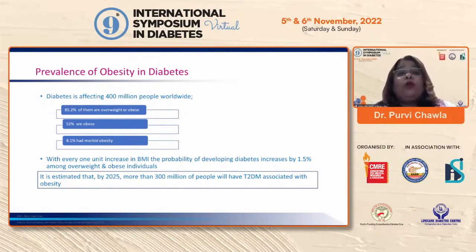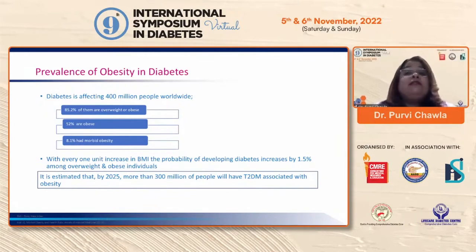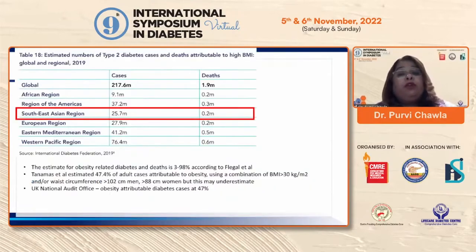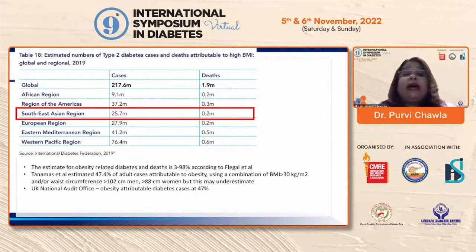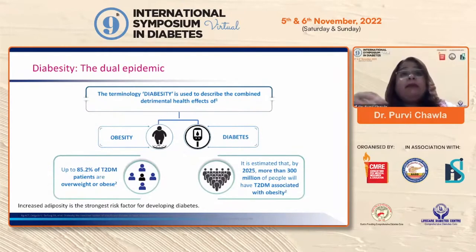With every unit increase in BMI, the probability of developing diabetes increases by 1.5 percent in those who are already overweight or obese. The number of deaths related to diabetes attributable to high BMI is also very high in the Southeast Asian region, which includes India.